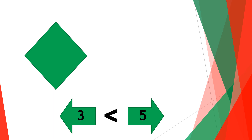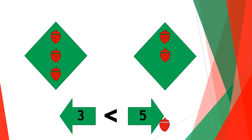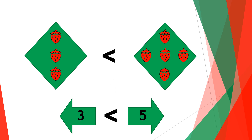If you pour three strawberries on one side and five strawberries on the other side — one, two, three and one, two, three, four, five — this means that three strawberries is less than five strawberries, and this clearly shows that three is less than five.